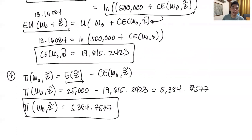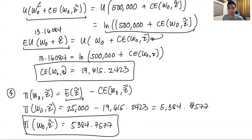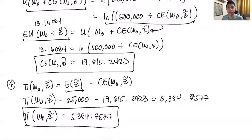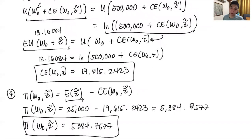That concludes our discussion on a deeper dive between the risk premium and the certainty equivalent. In this video, you were able to see how these two concepts are interrelated, how they transform a decision under uncertainty into a certain problem, and how the certainty equivalent serves as a measure of absolute risk aversion. In the next video, we'll formalize these concepts in terms of rates of return, which are more commonly used in finance. Thank you for your attention.